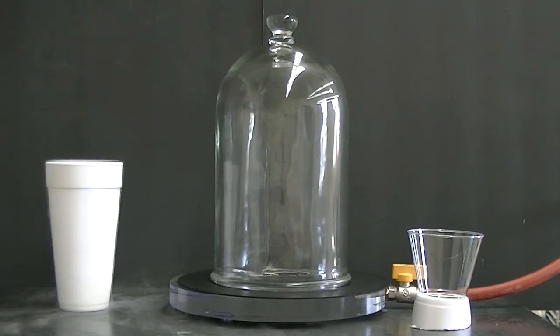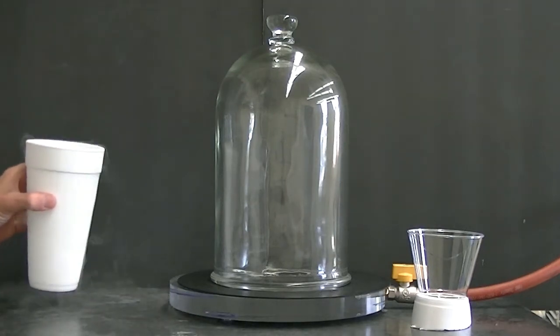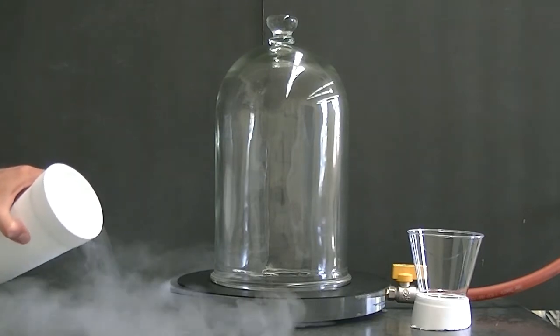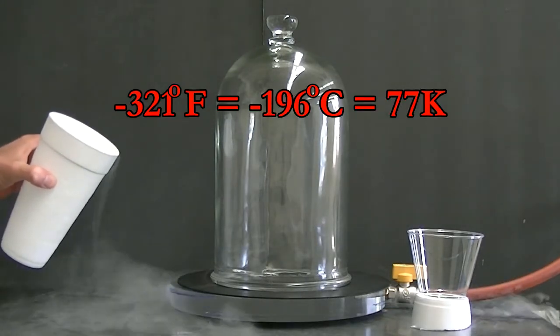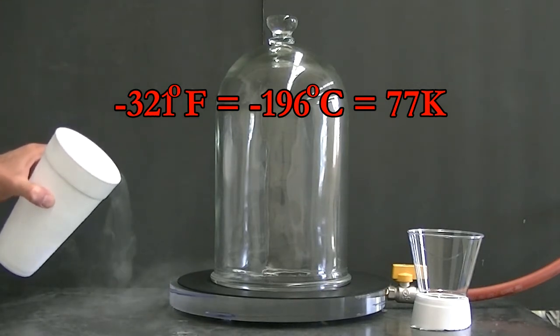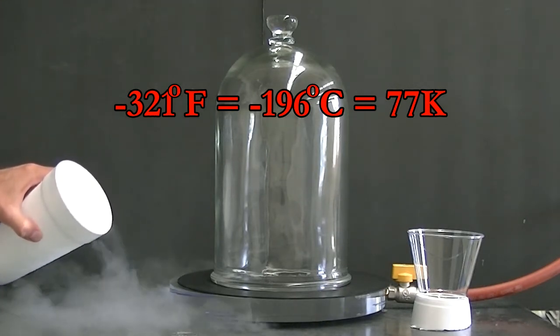In this cup is some liquid nitrogen. Maybe you've seen liquid nitrogen before. It's really cold. Minus 321 degrees Fahrenheit or minus 196 degrees on the Celsius scale. That's also 77 on the Kelvin scale.